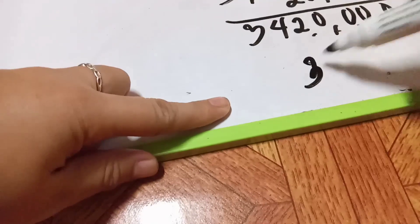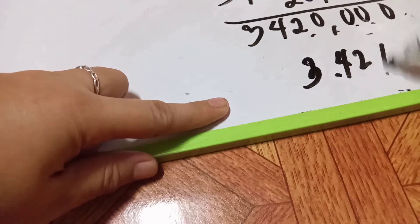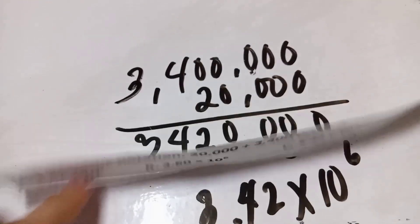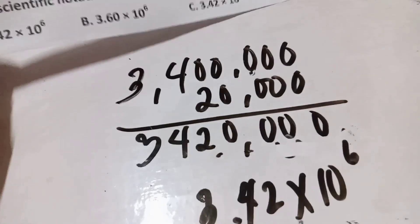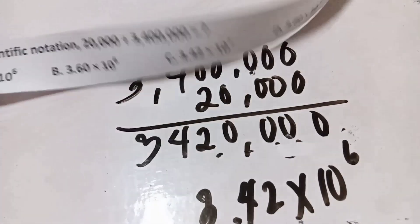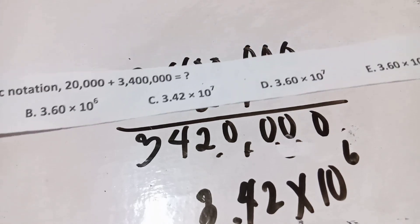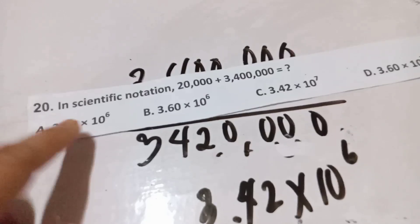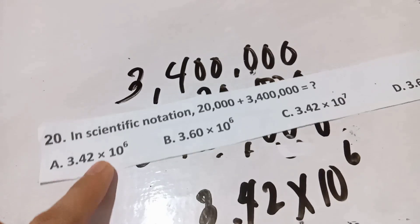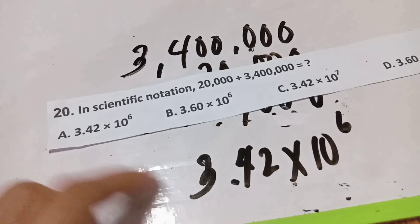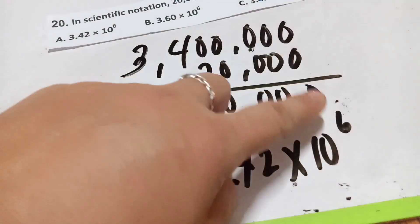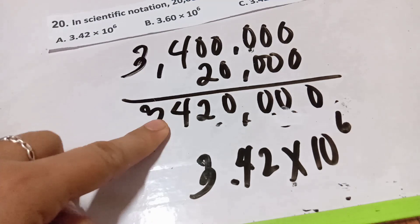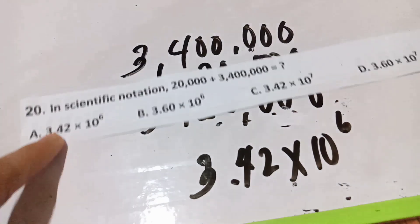Now, how do you write 3,420,000 in scientific notation? You need to move the decimal place 6 positions to the left, giving 3.42. So the answer is 3.42 times 10 to the 6th power. Count the places: 1, 2, 3, 4, 5, 6. The answer is letter A.